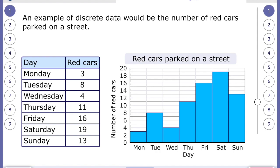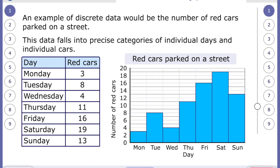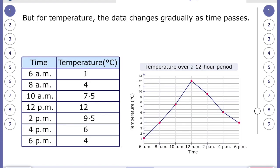Okay, so in this example here Saturday had the most red cars parked on the street and there was 19. The data falls into precise categories of individual days and individual cars. But for temperature the data changes gradually as time passes. And you can think back to science experiments we did last year in year 5 where you tried to keep liquid hot using insulation. And we measured temperature every few minutes and we saw the temperature slowly drop at different rates depending on what insulation we had used.